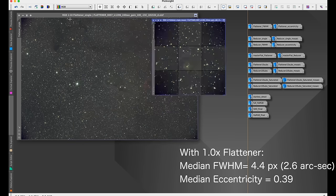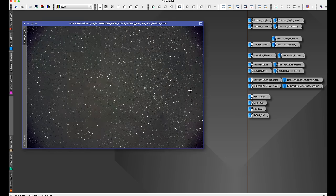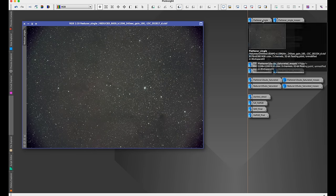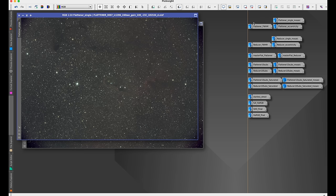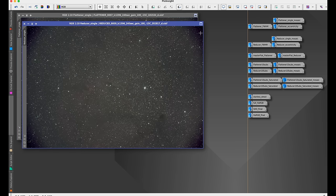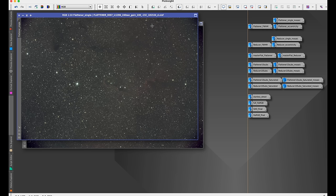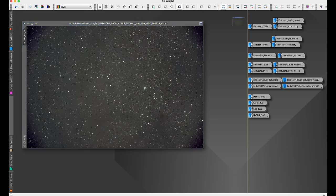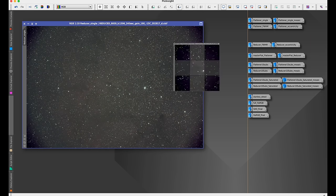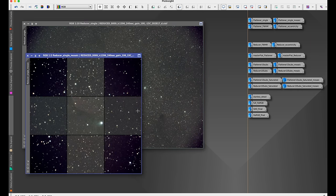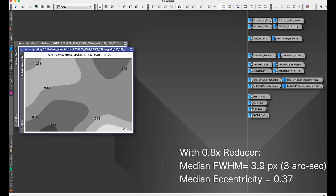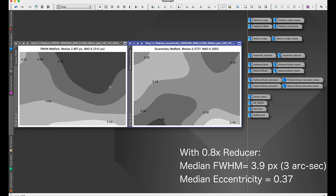Here is a single with the reducer. If we go back to the flattener you can see that the vignetting is quite a bit more with the reducer than it is with the flattener, which is to be expected. You can definitely see that here in this analysis with the dark corners.